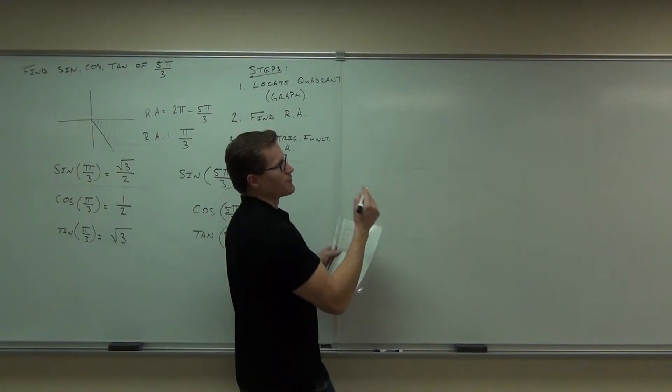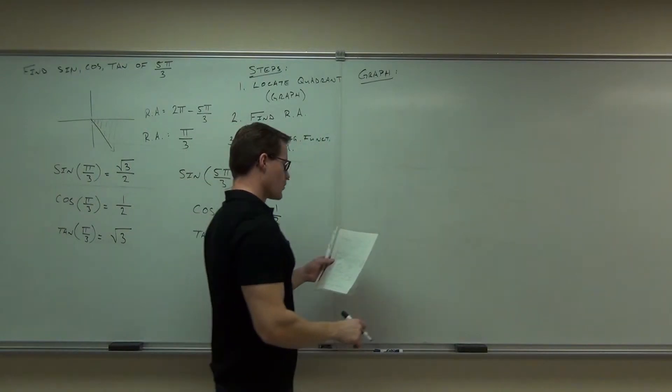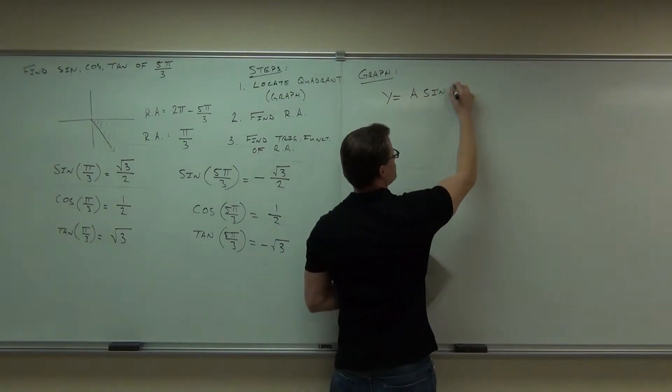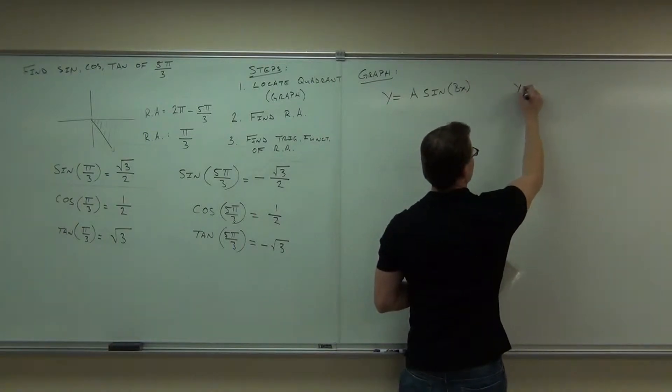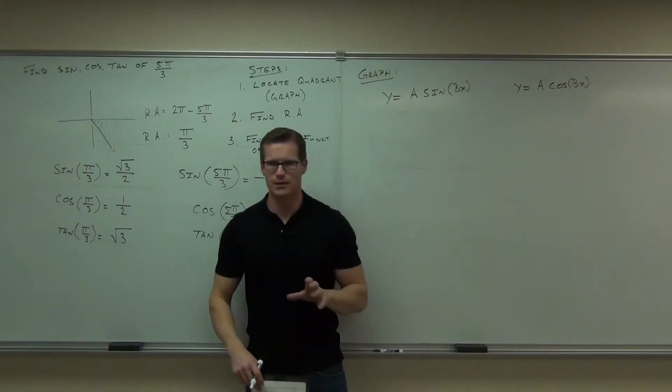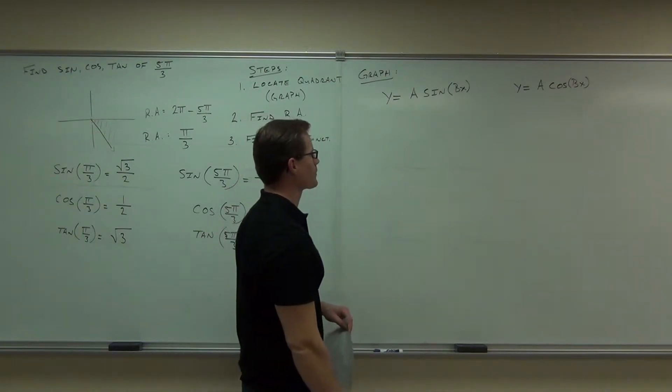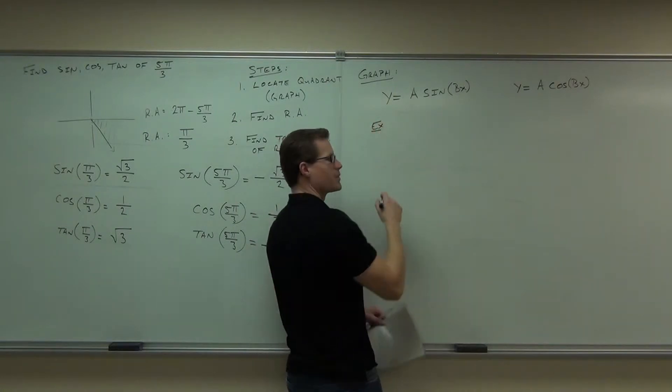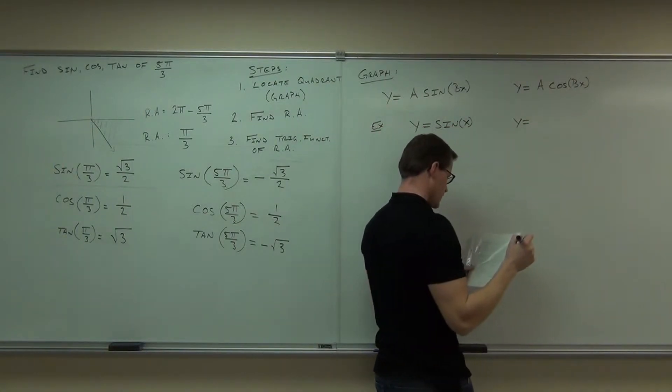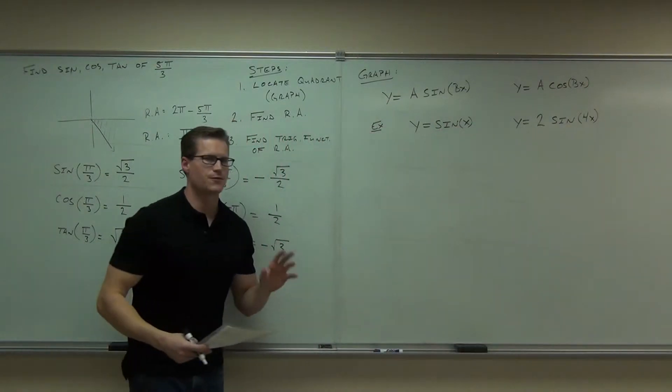So, we're going to graph a couple different types of functions here. We're going to graph things of the form y equals A times sine of some angle or cosine of some angle. And then I'm going to make it a little bit more complicated than that. Okay, we're going to graph another form probably next time where we're going to make this a little bit more advanced. So, for instance, our examples for this. I'm going to graph y equals sine x, just our standard sine curve, and y equals, let's see, 2 sine of 4x. And we're going to see the difference between these two graphs.